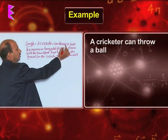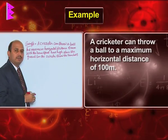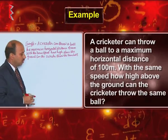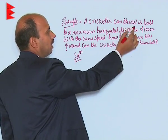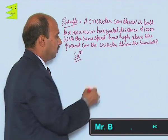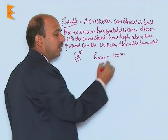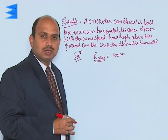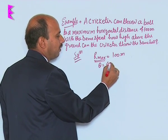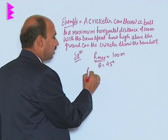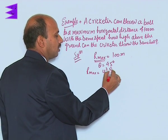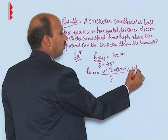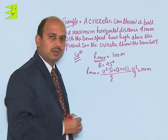Next example: a cricketer can throw a ball to a maximum horizontal distance of 100 meters. With the same speed, how high above the ground can the cricketer throw the same ball? R_max = 100 meters is given. For maximum horizontal range, we use the condition θ = 45°, giving R_max = u²·sin(2×45°)/g = u²/g = 100 meters.